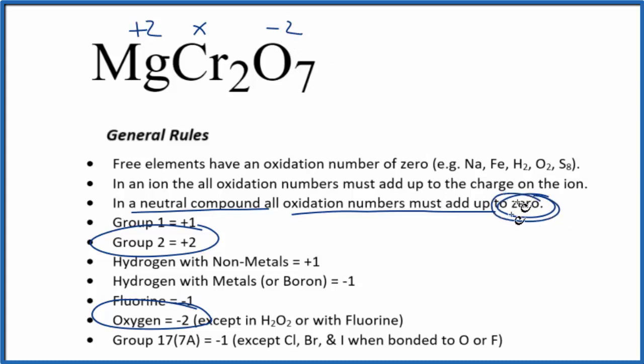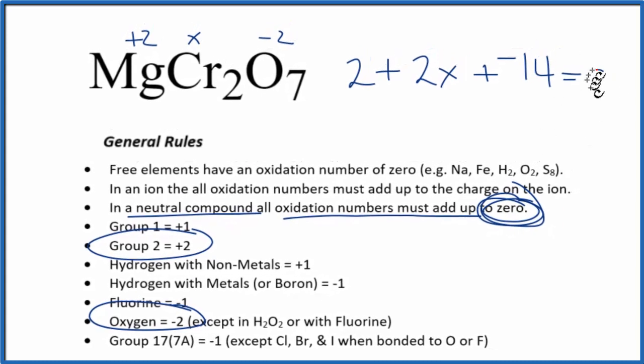We said the whole thing is going to equal zero, so we can just set an equation up. Two plus, and we have two X here, so we have two chromium atoms. Two X plus seven times the negative two, so that's minus fourteen. That'll all equal our zero here, because it's neutral.